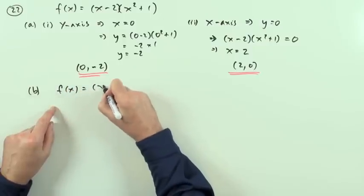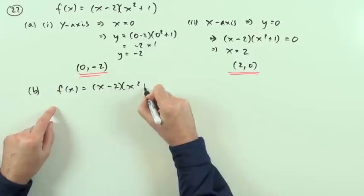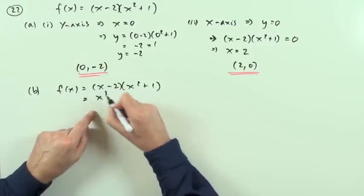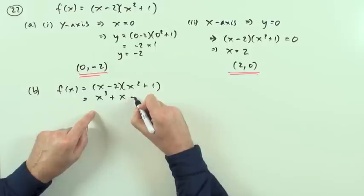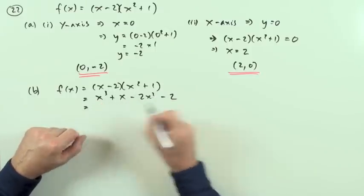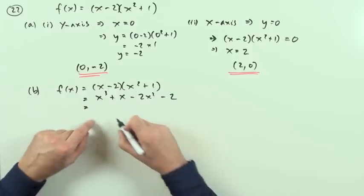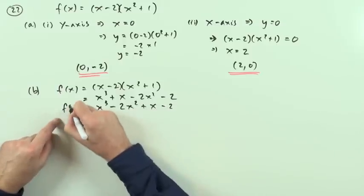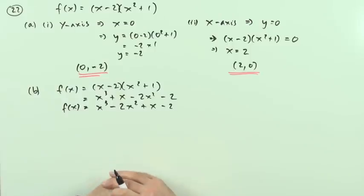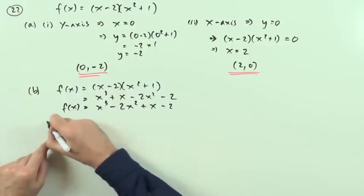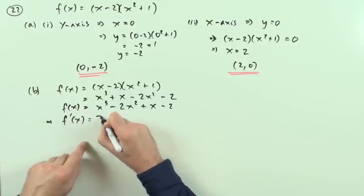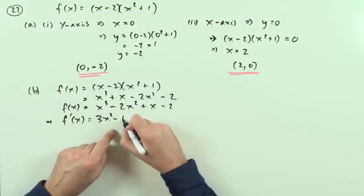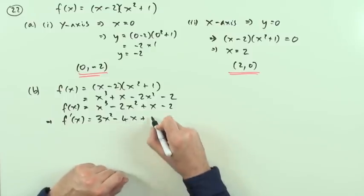If f(x) equals (x minus 2)(x squared plus 1), I'll need to multiply that out. That gives x cubed plus x minus 2x squared minus 2, which I'll write in order as x cubed minus 2x squared plus x minus 2. Now I can differentiate: f'(x) is 3x squared minus 4x plus 1.